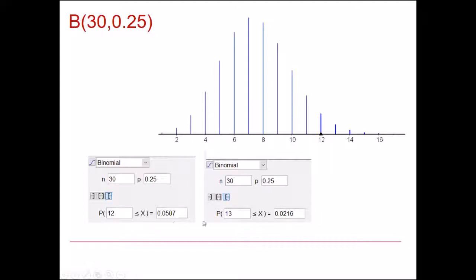So if we got 12, we'd say no, it's still likely enough that this dice is fair. But if we got 13 or more, we'd say actually that's really unlikely if the dice is fair, so we'll reject H0.